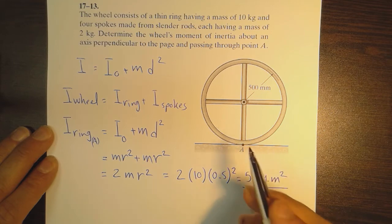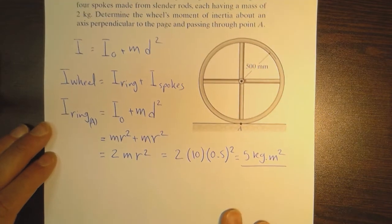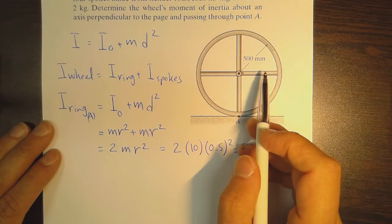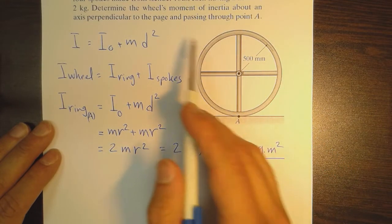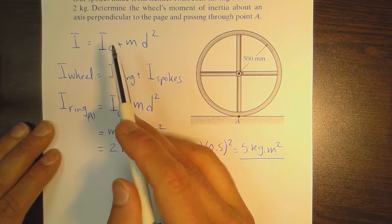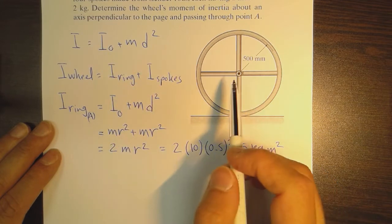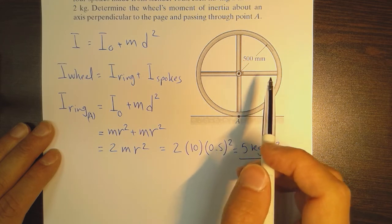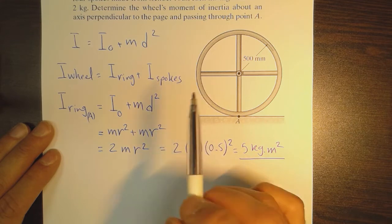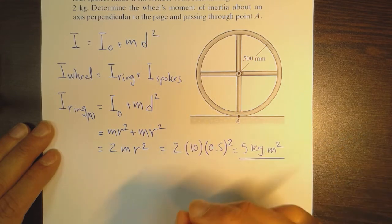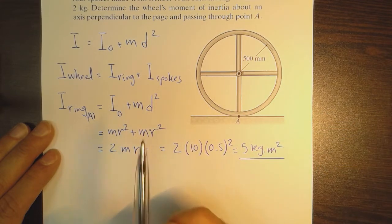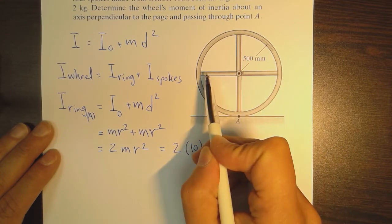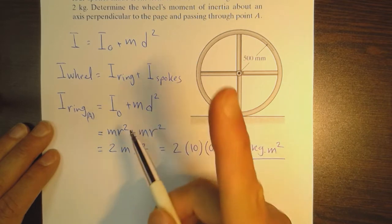Now for the spokes, when we use this relation we should consider that whatever moments of inertia we calculate must be around a specific centroid that we select for the system. For convenience, we can consider these two spokes as one single rod.